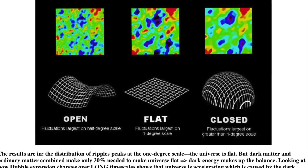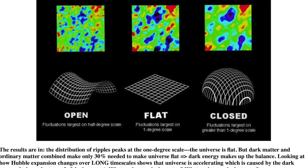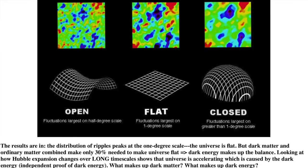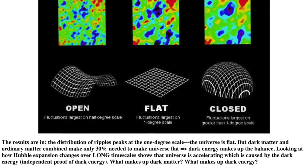After COBE, higher-resolution instruments were put up in high-altitude balloons in high mountains to observe the ripples in small patches of the sky. Those experiments indicated a flat geometry for the universe, to within 0.4% uncertainty.